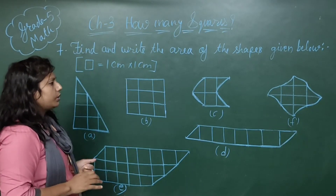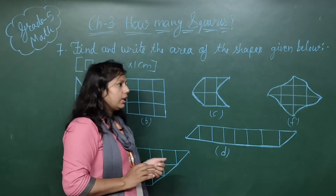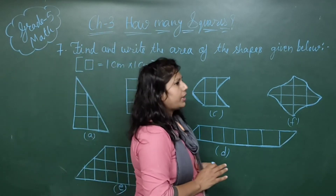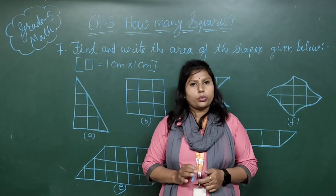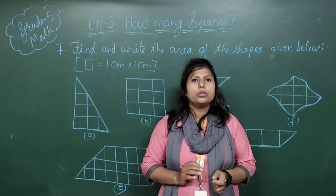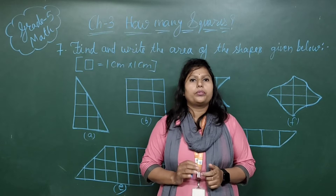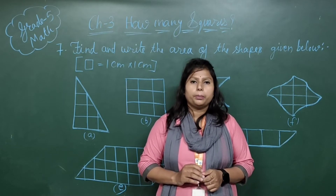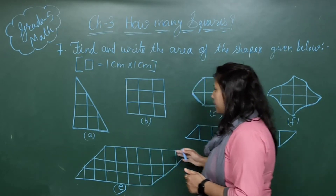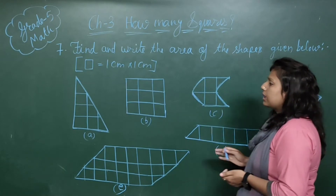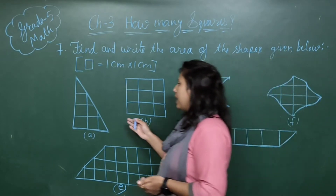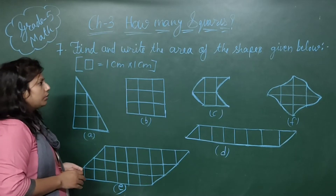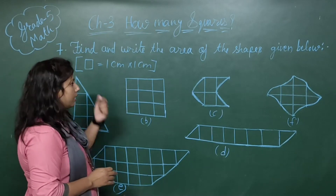As I told you in the last video, there are two ways to find area. First, for a square, you can find side into side. For a rectangle, you can find length into breadth. But here some shapes are different — some are having a half square, some are having less than half a square. So how can you find that area?